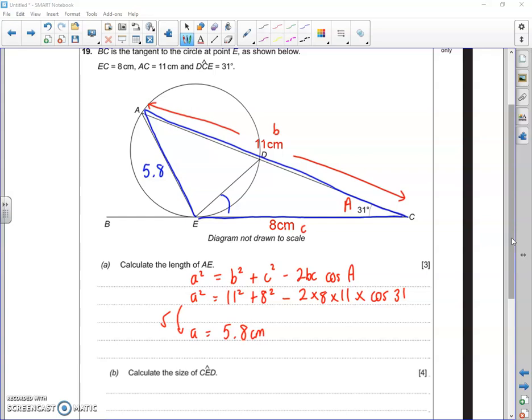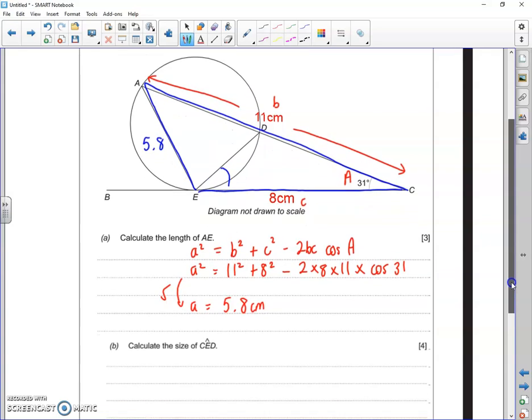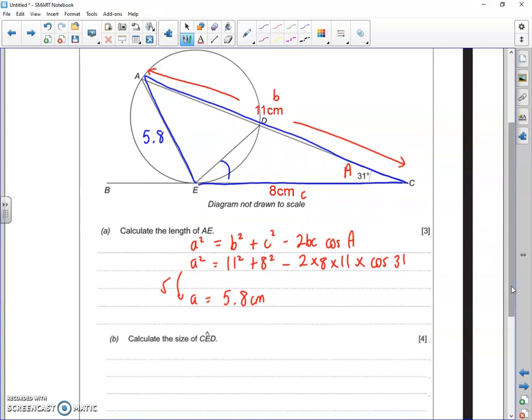Now the circle must mean it's got circle theorems involved somehow. And it's the alternate angle rule that says that that angle up there is equal to that angle down there. So even though we've been asked to find C, E, D, if we can find C, A, E, they are actually the same angle.